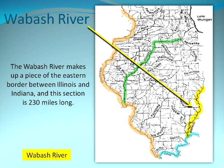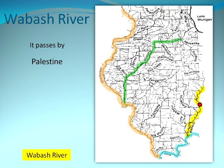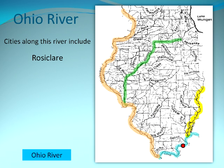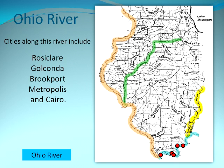The Wabash River makes up a piece of the eastern border between Illinois and Indiana, and this section is 230 miles long. It passes by Palestine and Mount Carmel. The border of Illinois and Kentucky is defined by the Ohio River, which runs 133 miles along the southeastern part of the state. Cities along this river include Rosiclair, Golconda, Brookport, Metropolis, and Cairo.